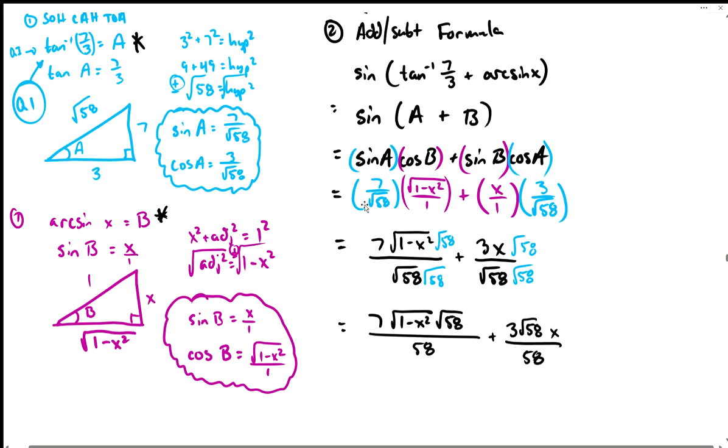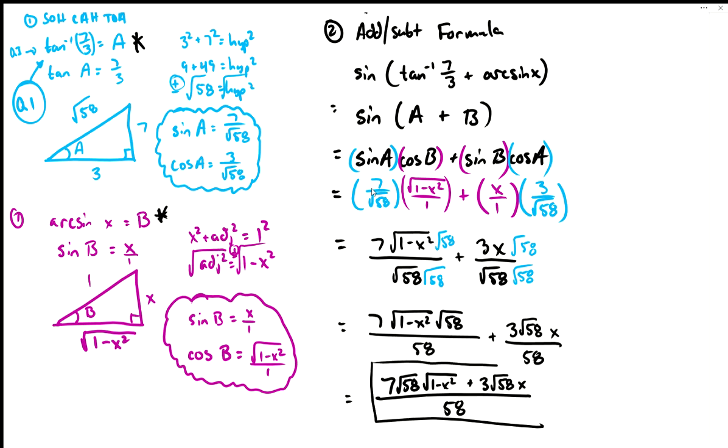For our final step let's combine it because we have a common denominator. I'm going to rearrange this first term just a little bit in the numerator. I'm going to change it to be 7 square root of 58 square root of 1 minus x squared plus 3 square root of 58 x over 58. That's our final answer with the rationalized denominator for this problem.